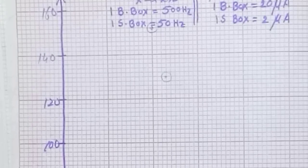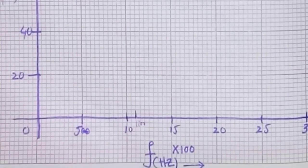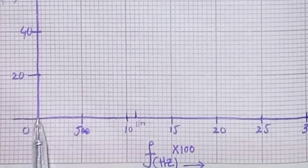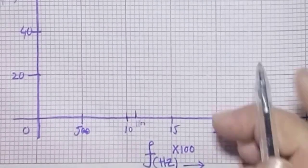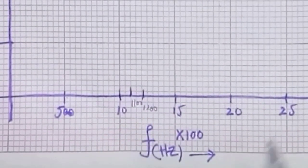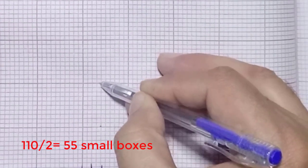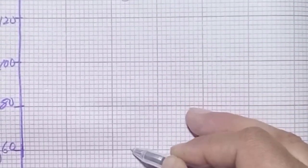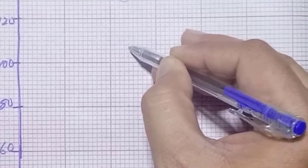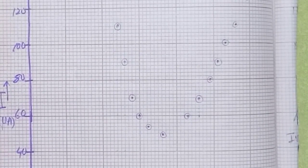The third observation was 1200 Hz frequency with a corresponding current of 110 microamperes. For this we move 24 boxes along the x-axis: 10, 20, 22, 24 — representing 1200 Hz. From this point we move 55 small boxes along the y-axis: 10, 20, 30, 40, 50, and then 5 more makes 55. In similar fashion we plot all the remaining points on the graph.